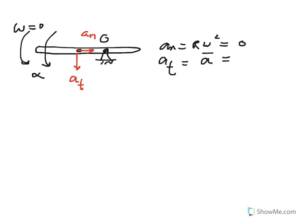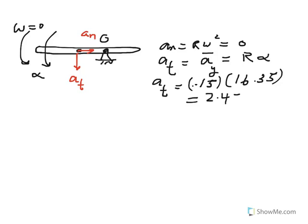We know that the normal component is equal to R omega squared. Since omega is zero, that should be zero. And then the tangential component of acceleration of the center of mass in the Y direction becomes R times alpha. R is the distance between point G and point O, which is 0.15, times this alpha that I just calculated, 16.35. So that becomes 2.4525, that would be in meters per second squared.